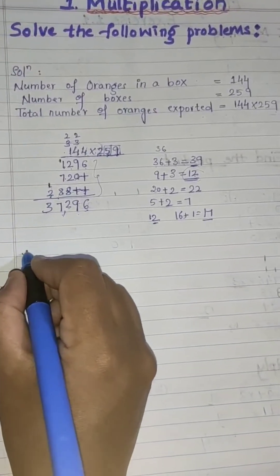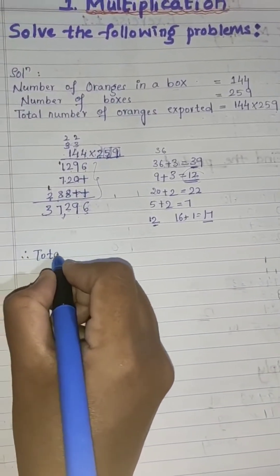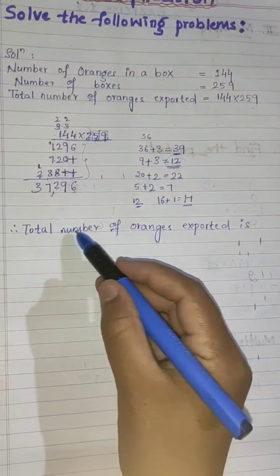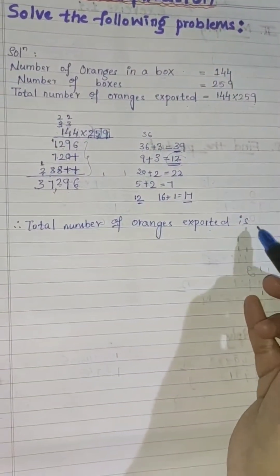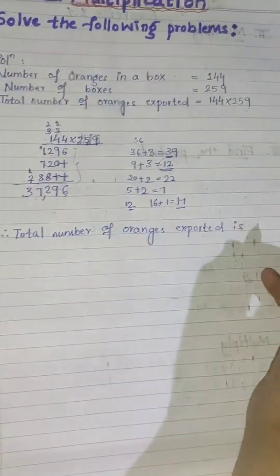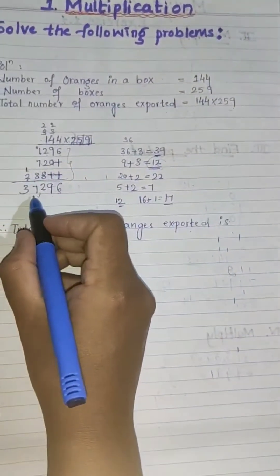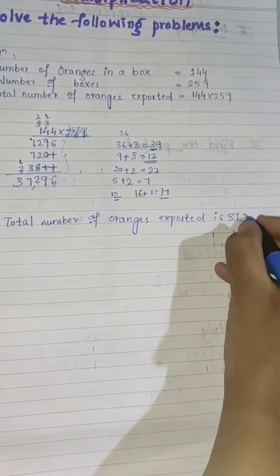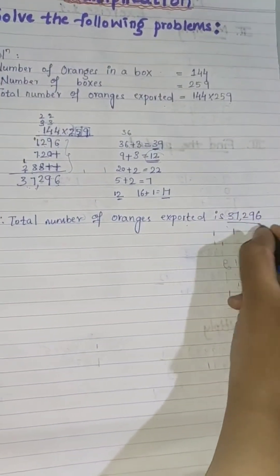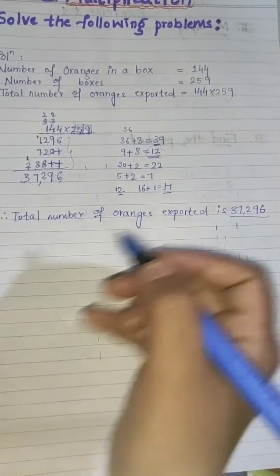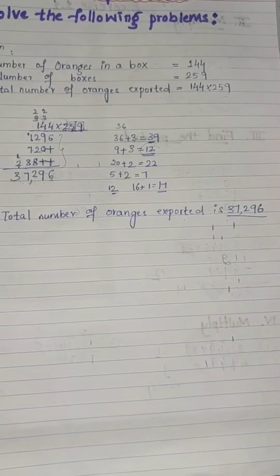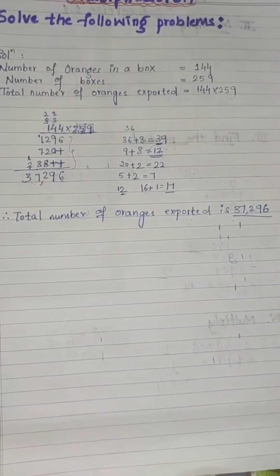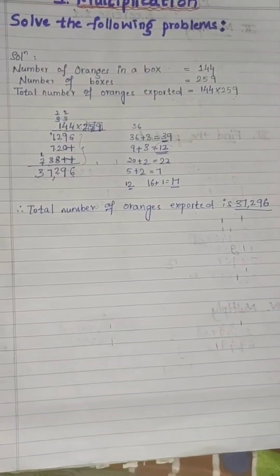So the answer is 37,296. Therefore, the total number of oranges exported is 37,296. Understood? Very good.